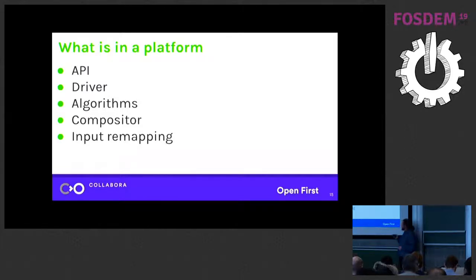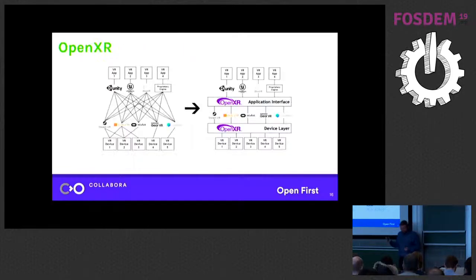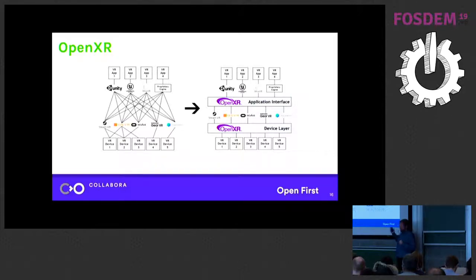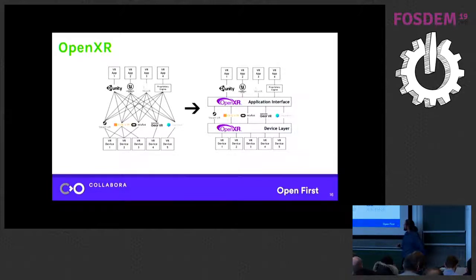Most importantly, we need an API. Currently we have the situation on the left, where there are a whole bunch of different APIs with no really uniform way of talking to hardware. Luckily, just like OpenGL, there's work on something called OpenXR — made by the same people that made OpenGL, from Khronos.